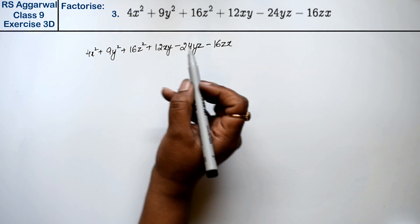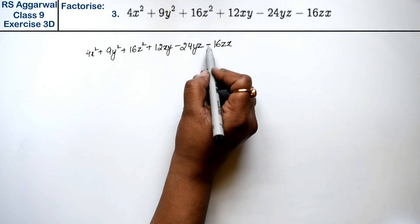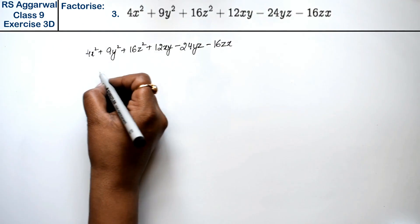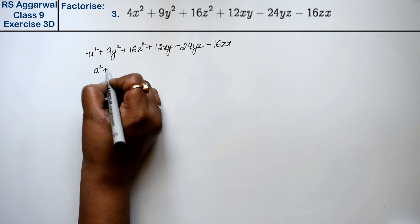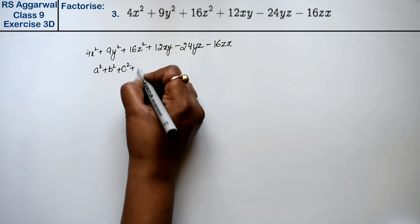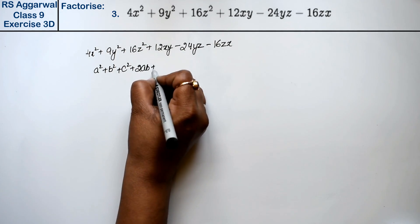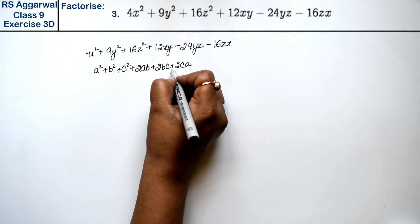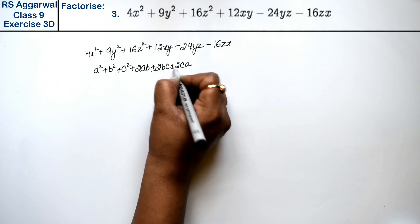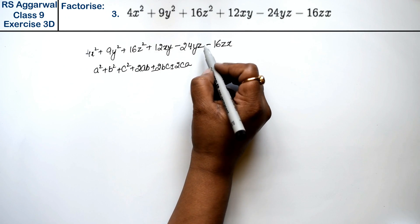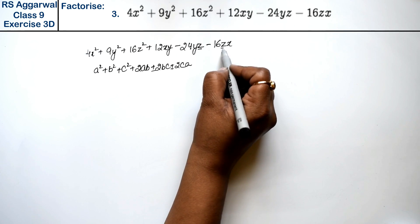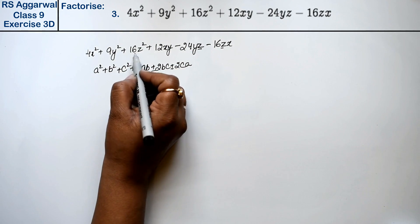Now see, first of all, we have minus in two places. Our formula was a² + b² + c² + 2ab + 2bc + 2ca. There is a plus here, but this place is minus, so that means which value is repeated? Z is repeated, so z means what is our minus.